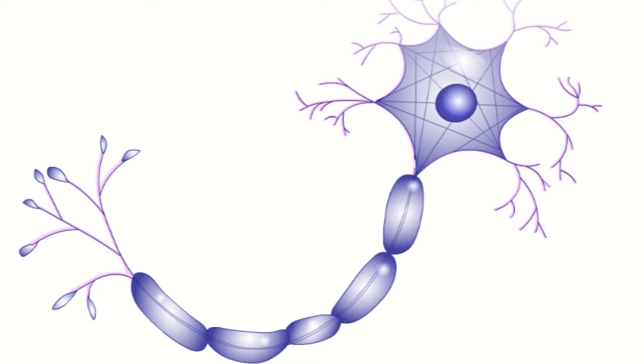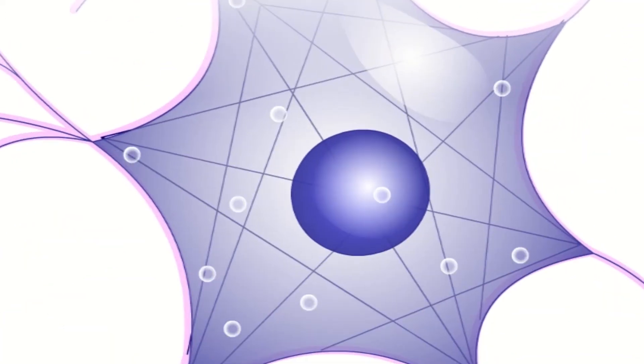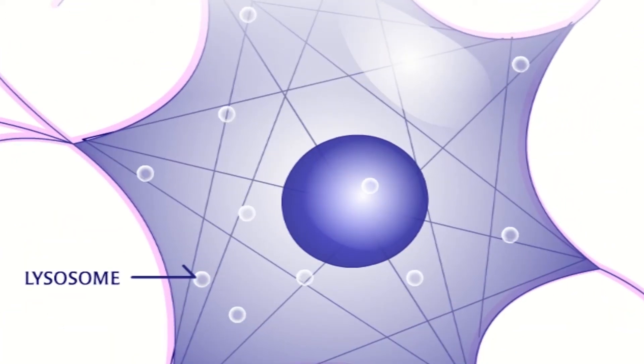Normally hex A is found in lysosomes of cells, specifically nerve cells. Lysosomes store and recycle the large molecules of the cells.